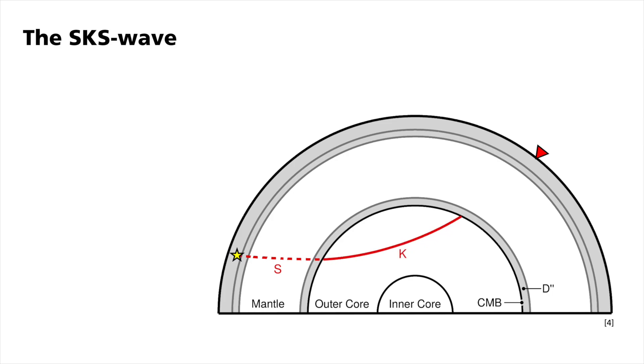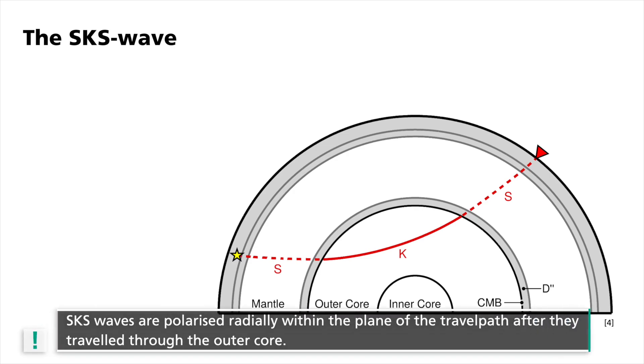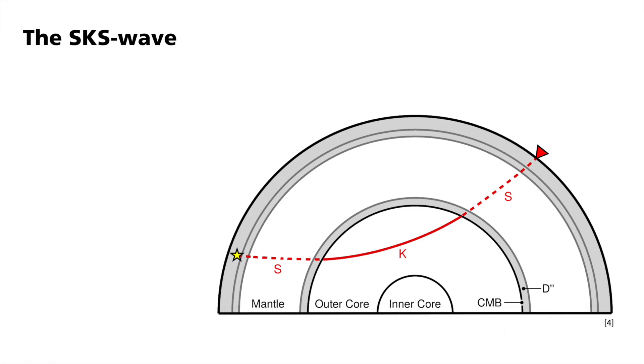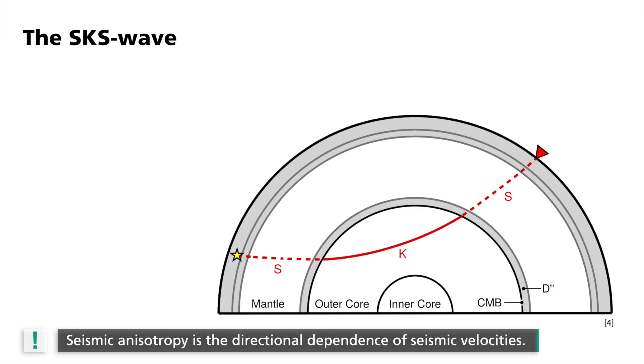It enters the Earth's liquid outer core and is converted to a compressional P-wave. This is denoted with the K for the German Kern, which means core. When it reaches the CMB on the receiver side again, parts of the P-wave are converted back into an S-wave. Since P-waves only oscillate in longitudinal direction, the back-converted S-waves now are polarized radially within the plane of the travel path. They are now useful to study seismic anisotropy, which is the directional dependence of seismic velocities.